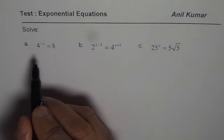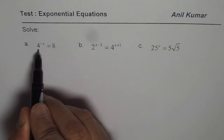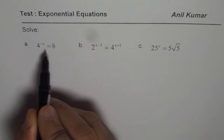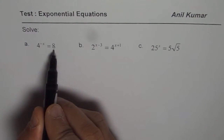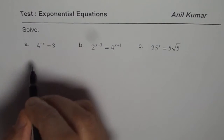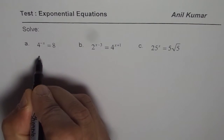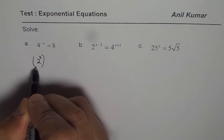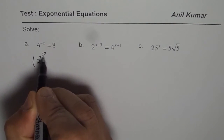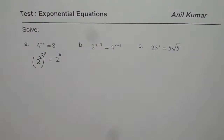For 4 to the power of minus x, it is good to write both sides in terms of exponents of 2. So 4 can be written as 2 squared, so we write 2 squared to the power of minus x equals to 8, which is 2 cubed. That is how you write it with a base of 2.